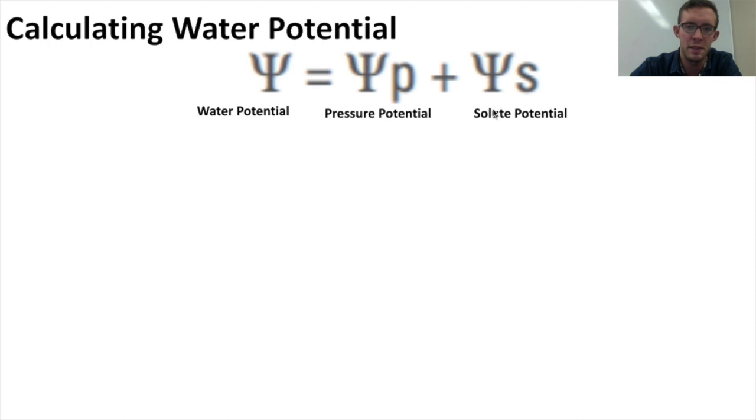So what is the pressure potential and what is the solute potential? Well, for most AP Bio examples, the pressure potential will be zero. That's because most Bio examples are taking place in natural open containers rather than pressurized or depressurized containers.